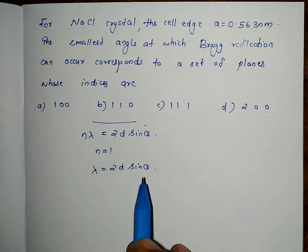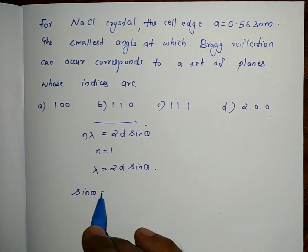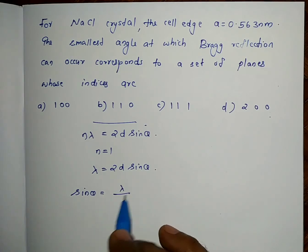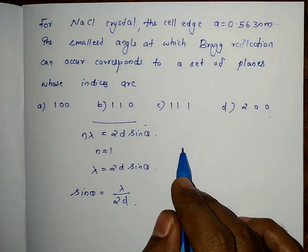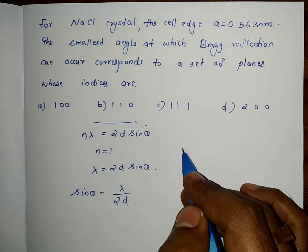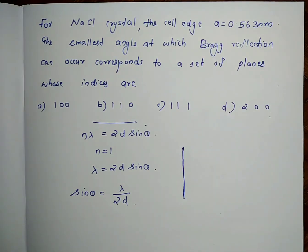From this equation, sin θ equals λ divided by 2d. Now, d is the interplanar spacing. If you consider a crystal lattice, it will have many planes. The spacing between two planes is d, which relates to the lattice parameter a.